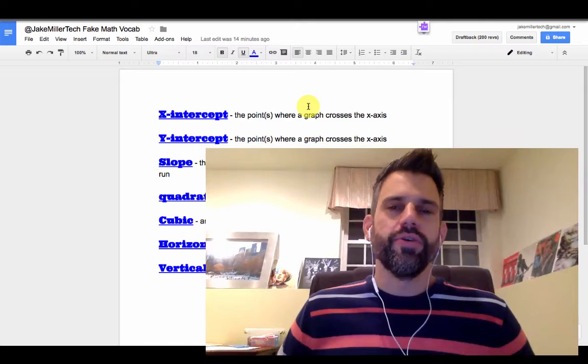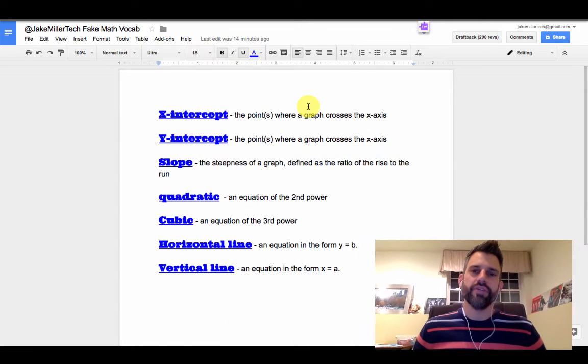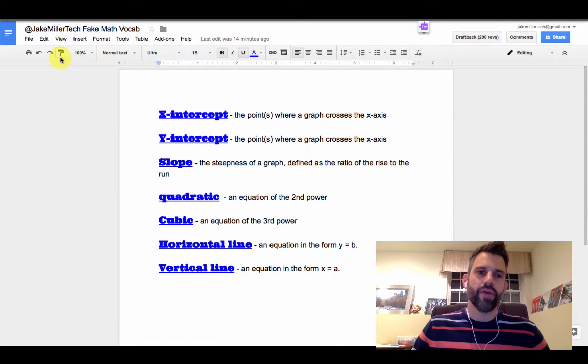Hi there, Jake Miller here. In a recent video I showed you an easy way to change text to match other text in Google Docs, which is the paint format tool.